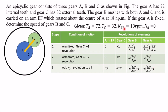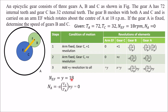Two conditions are given: speed of arm is 18 RPM, so Y equals 18. Speed of A is 0, so the term for A equals 0. Putting Y equals 18 into the A expression, with Tc equal to 32 and Ta equal to 72, we solve to get X equal to 40.5.